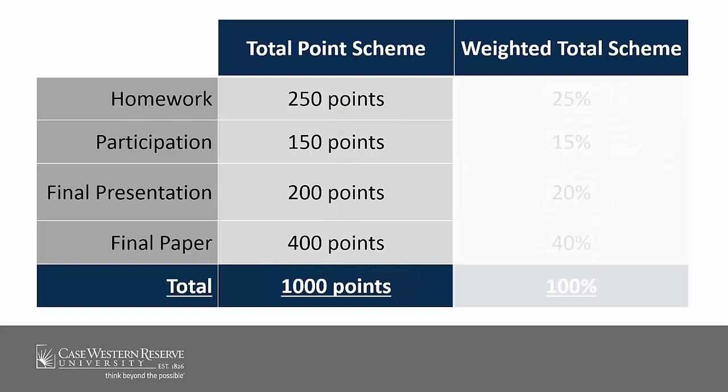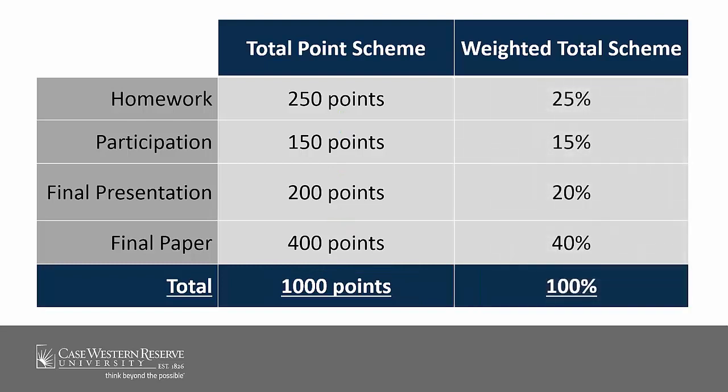Weighted Total courses, on the other hand, are a bit more complex. In a Weighted Total course, certain items may make up a category, which then contributes to a percentage of the final grade. You should find that your current grading structure fits into one of these categories, or even a combination of the two, so you'll know which path to follow in the video series.